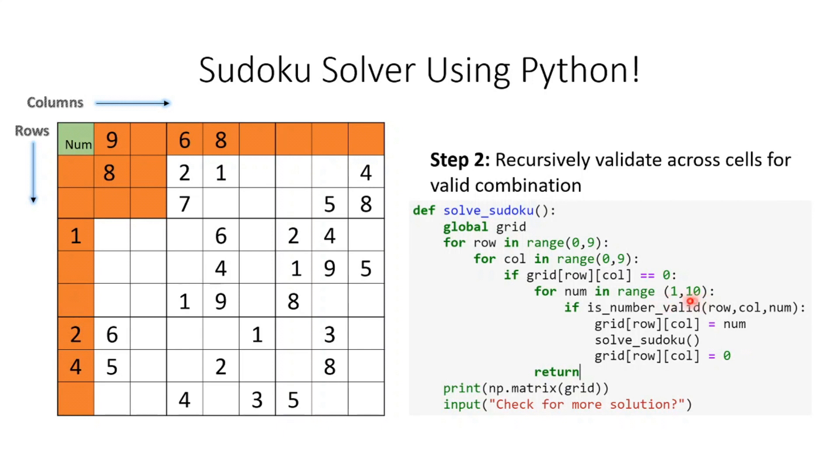This is the helper function we wrote. I'm seeing whether that number is valid for that particular column and row. If it's valid, I update that value and recursively call the solve sudoku function. If the number is not found or it's unable to find a valid number, it reverts back the value to zero, then the loop continues.